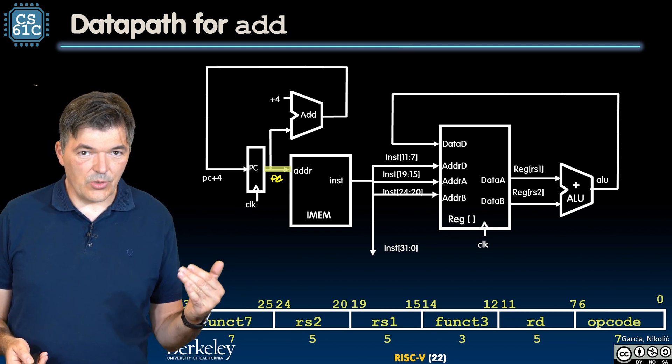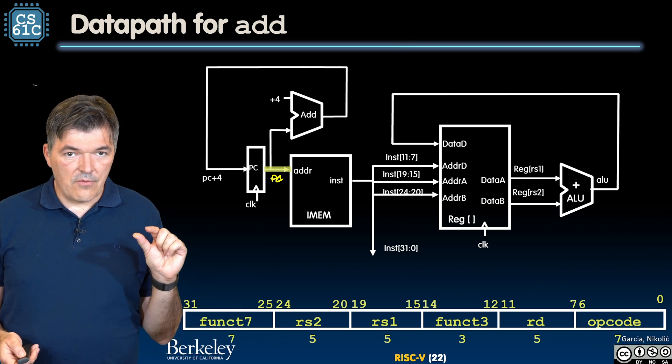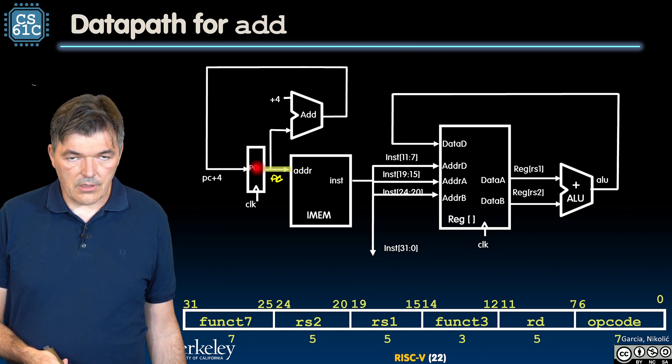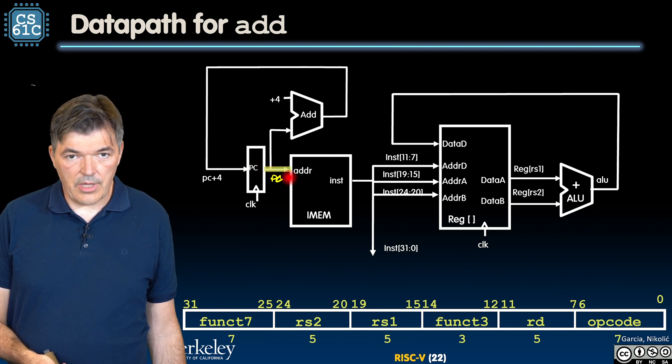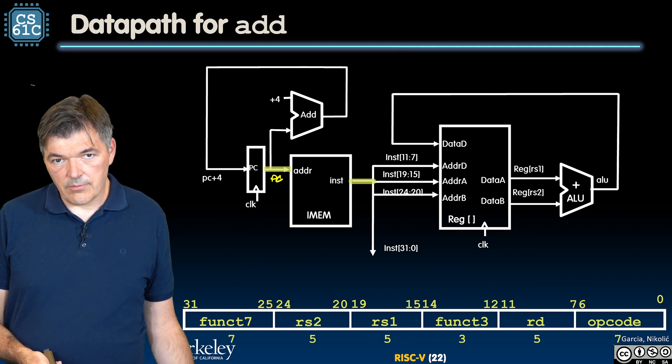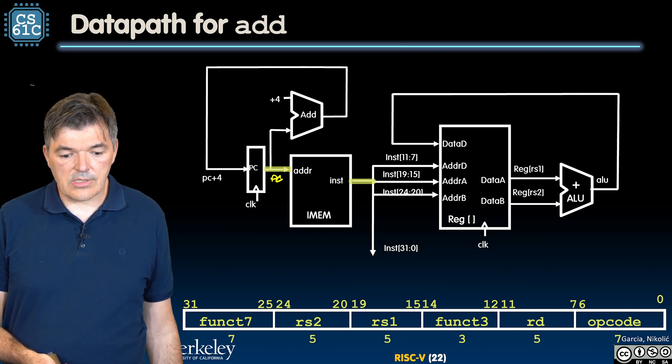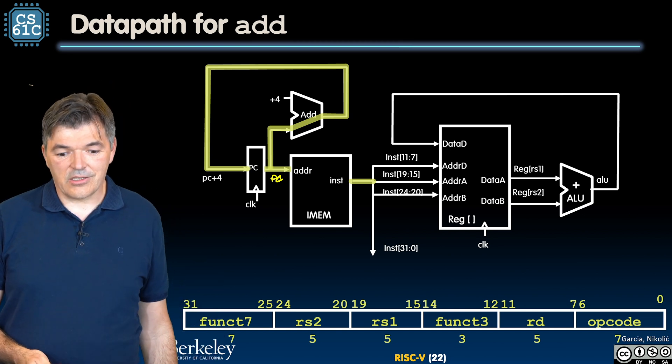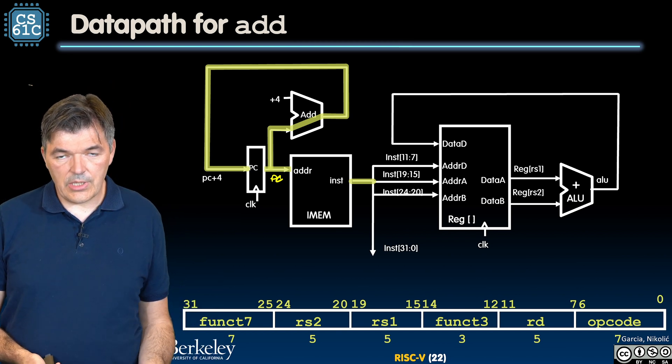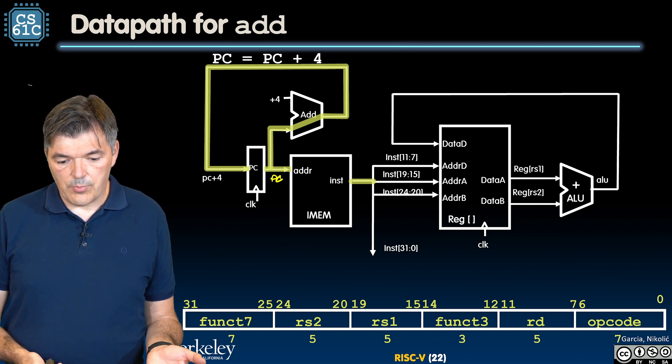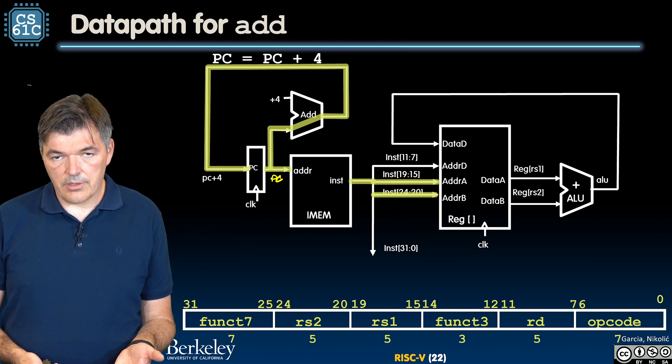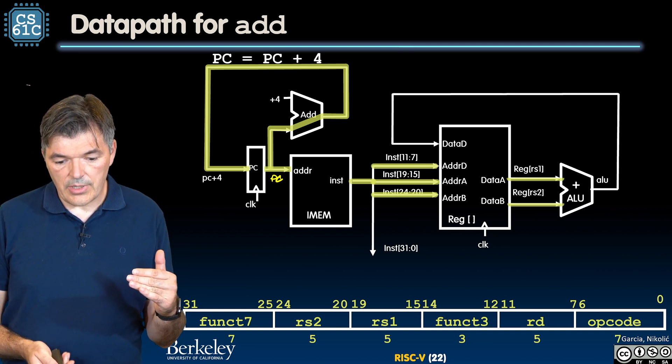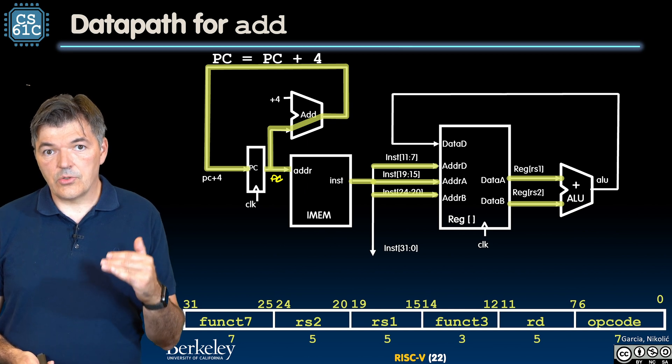Let's recap what we need to do to execute the whole instruction. First, the current value of the program counter points to the address in the instruction memory that is going to, after the access delay, produce the instruction at its output. Simultaneously we are going to get a new value of the program counter, pc plus 4, but we are not going to write it in until the next clock tick. Decoding is straightforward, we just pluck the parts of that instruction to point to the register file.